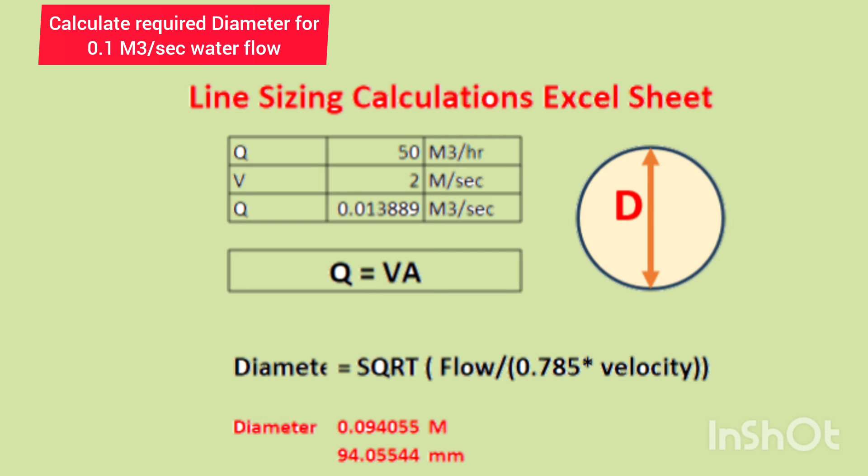So we can consider a 4-inch diameter pipe for this flow. This is a very basic calculation method. Using this velocity of 2 meters per second, you can calculate pressure drop.